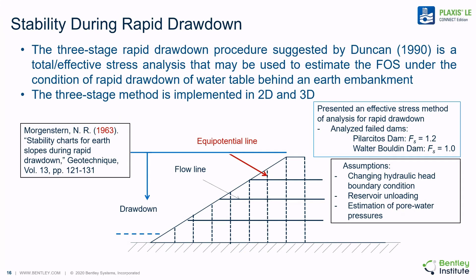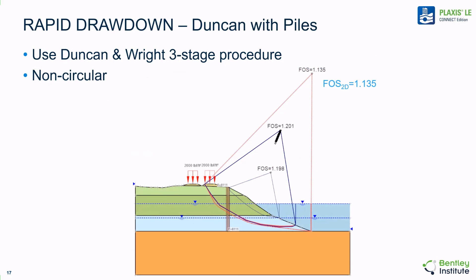The software also implements the three-stage rapid drawdown procedure as suggested by Duncan in 2005 to estimate the factor of safety under the condition of rapid drawdown of a water table in an earth slope. The three-stage method is available for both 2D and 3D analysis. In a practical example, the Duncan and Wright three-stage procedure is utilized to analyze a changing water table against the slope, using non-circular slip surfaces. An ultimate factor of safety of 1.14 is calculated in this case.